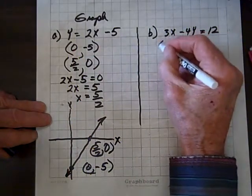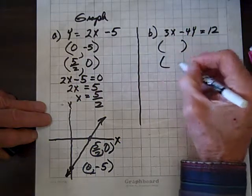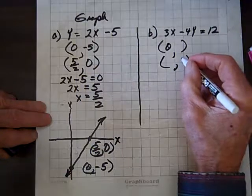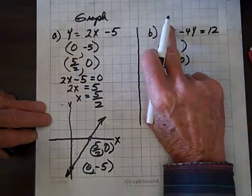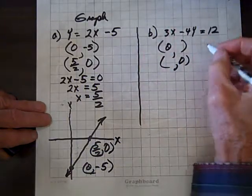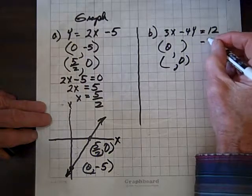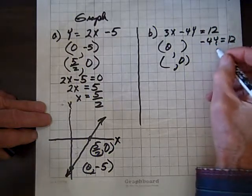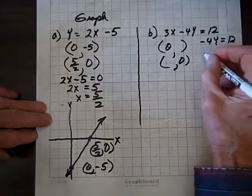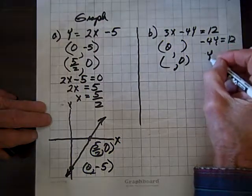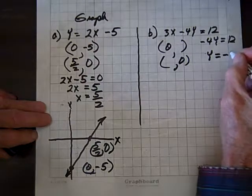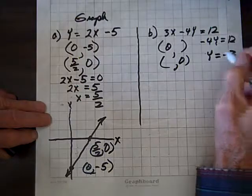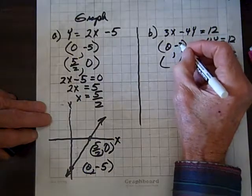Now, let's do the same thing here. We'll let x be zero and then we'll let y be zero. If x is zero, that term's wiped out, and we wind up with minus 4y equals 12. So dividing through by negative 4, we wind up with y equals minus 3.